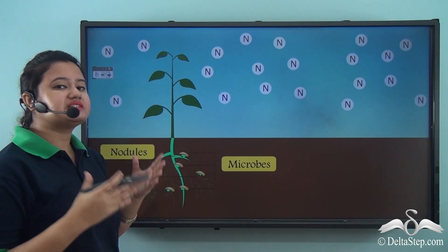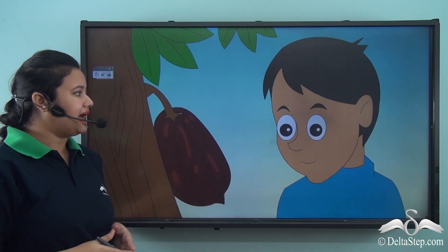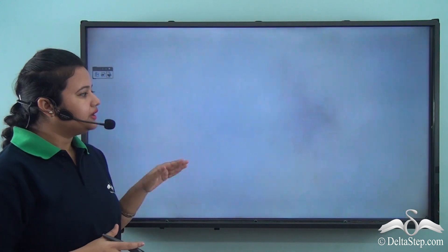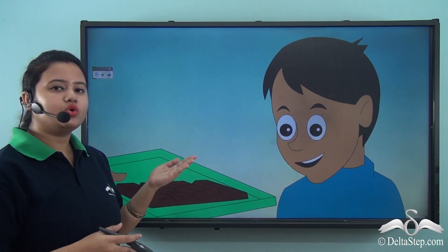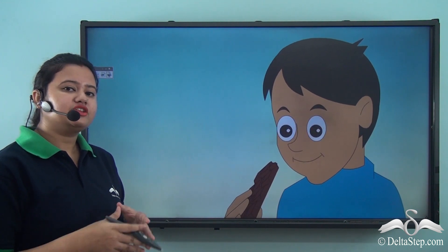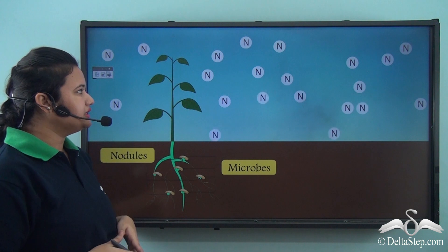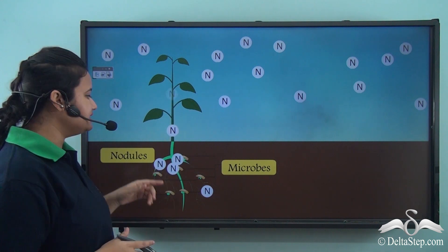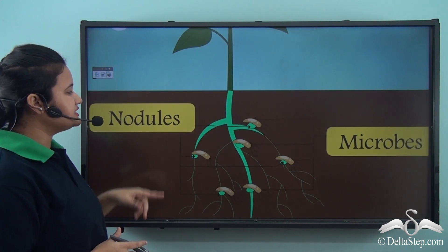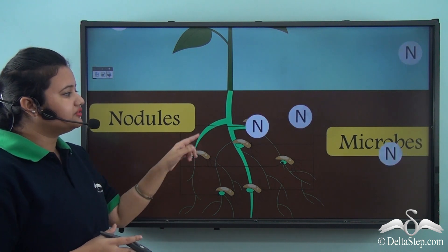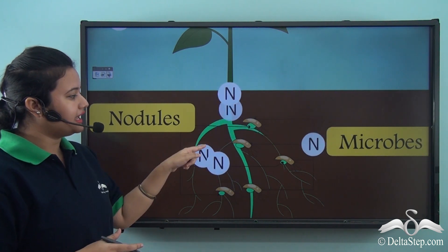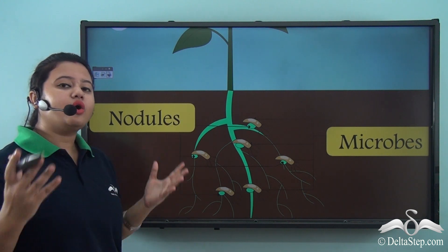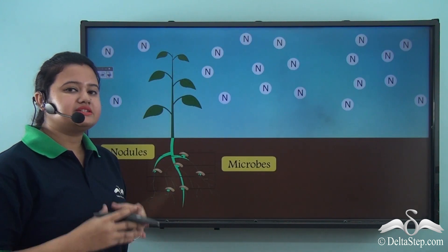Nitrogen is the most abundant gas in atmosphere and it helps to maintain soil fertility and the growth of plants. However, just like a chocolate lover cannot relish a cocoa plant instead of chocolates, plants also cannot absorb nitrogen directly from air. As a result, nitrogen-fixing bacteria present at the root nodules of plants convert nitrogen into a usable form, helping roots to absorb it. This is how nitrogen enters the food chain and all living beings can utilize this vital gas.